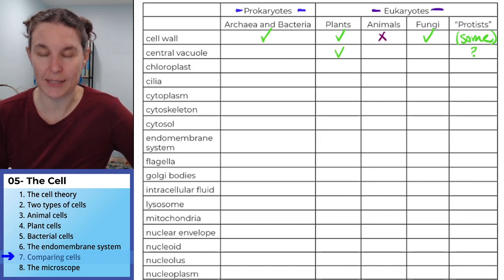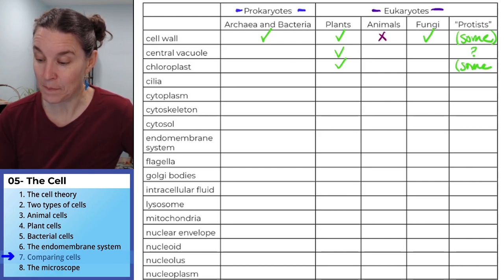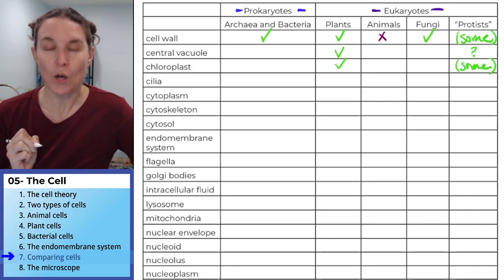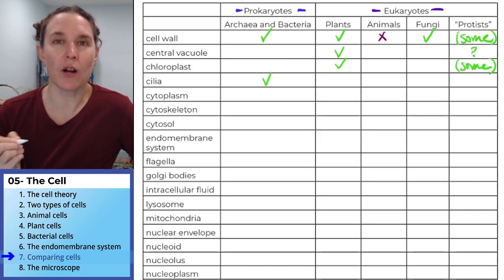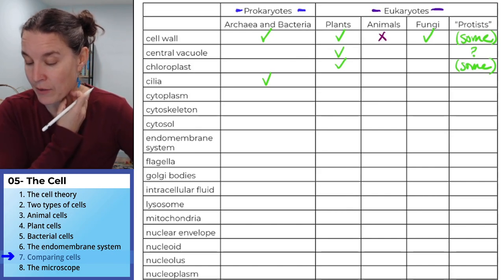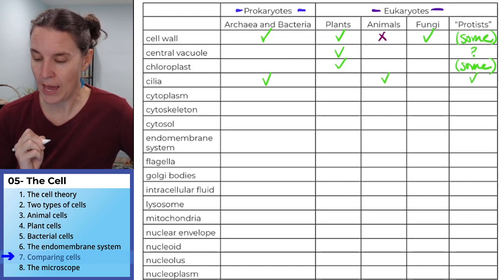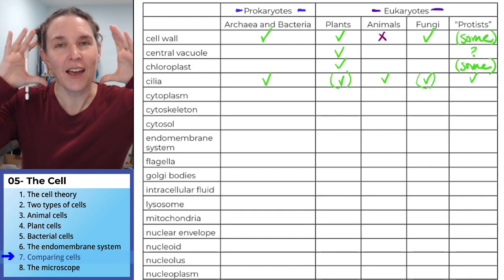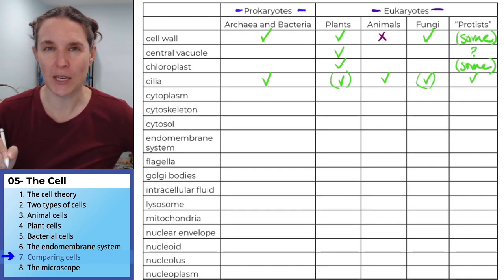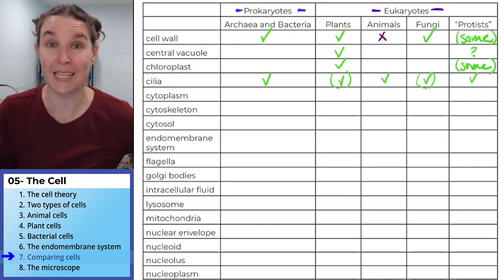Chloroplasts — who has chloroplasts? Plants — that's where we do photosynthesis — and some plant-like protists. Who has cilia? We saw those in the diagram of the prokaryote, so we know they can have them. Animals can have them, we saw them in protists. I'm putting parentheses around plants and fungi because I can't think of a ciliated example right now, but I'd guess they probably do.